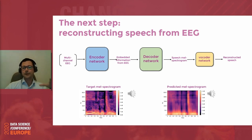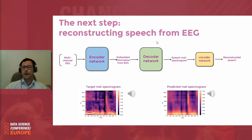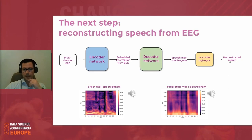That gives a glimpse of the next step: can we reconstruct speech just from recorded EEG? The network layout has multi-channel EEG as input to an encoder network, which extracts embedded information from EEG, feeds it into a decoder network to reconstruct a spectrogram of speech, and then uses a vocoder network to reconstruct the speech. I'm going to play a small part that we managed to reconstruct — the original speech in German, followed by reconstructed speech.